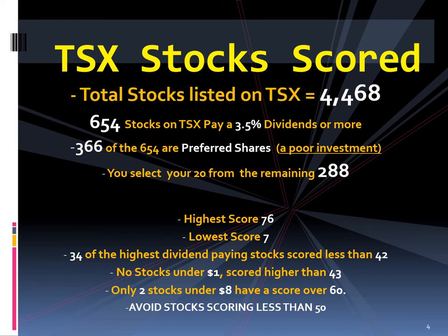Of that 288, the highest score was 76 and the lowest score was 7. Thirty-four of the highest dividend paying stocks scored less than 42. No stocks under $1 scored higher than 43. Only two stocks under $8 have a score over 60. I avoid buying stocks scoring less than 50.